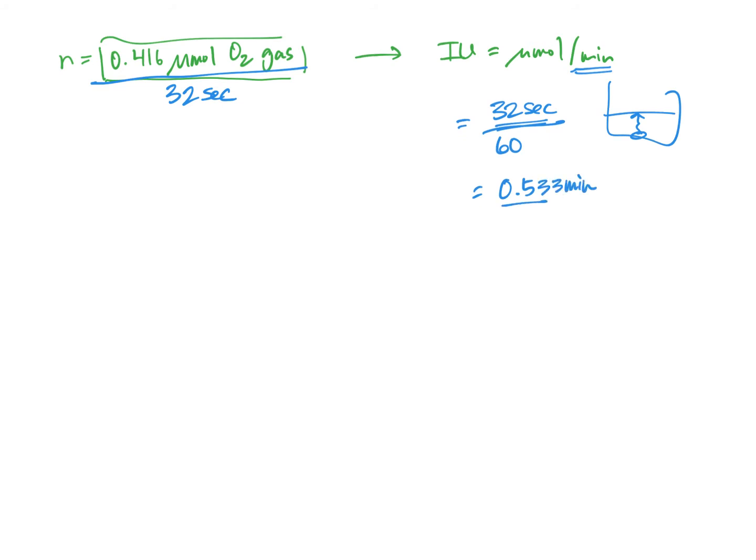So really, we have 0.416 micromoles of gas per 32 seconds. But again, that's not minutes, so let's convert it.